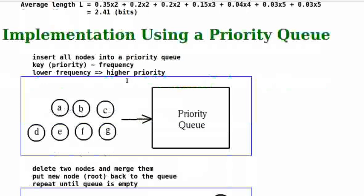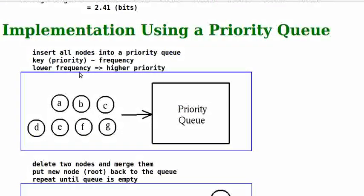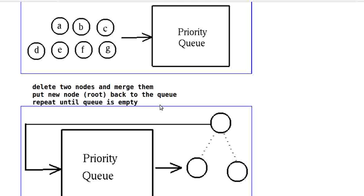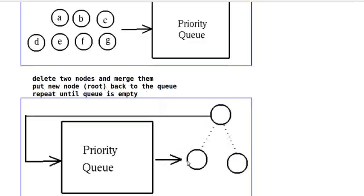A Huffman tree can be conveniently constructed using a priority queue that we discussed in the previous video. We just need to insert all the nodes into a priority queue. We treat the priority queue as a black box and we know that the element with the highest priority always comes out first. Here, we associate the key or priority with the symbol frequency. The smaller the frequency, the higher the priority. So we delete 2 nodes from the priority queue which will always have the lowest frequencies. We merge these 2 nodes to obtain a new frequency and put the merged root node back to the queue. We repeat the process until the queue is empty and we have a single tree.